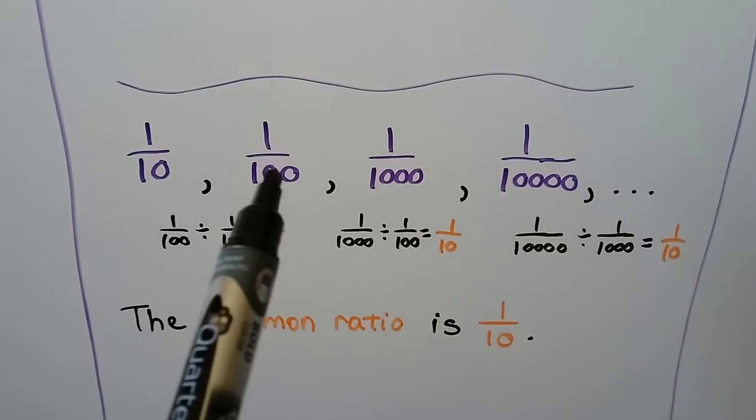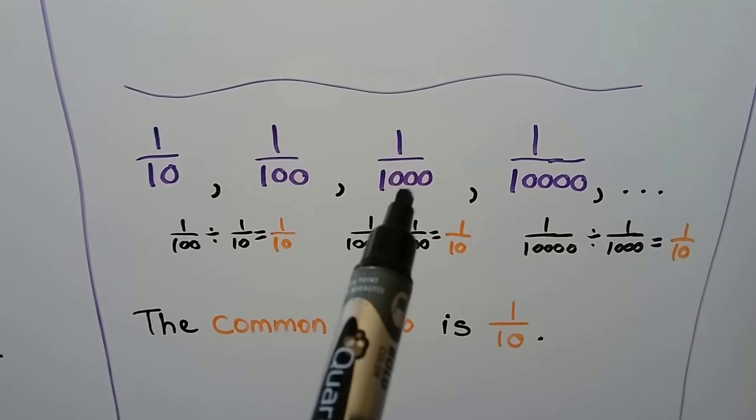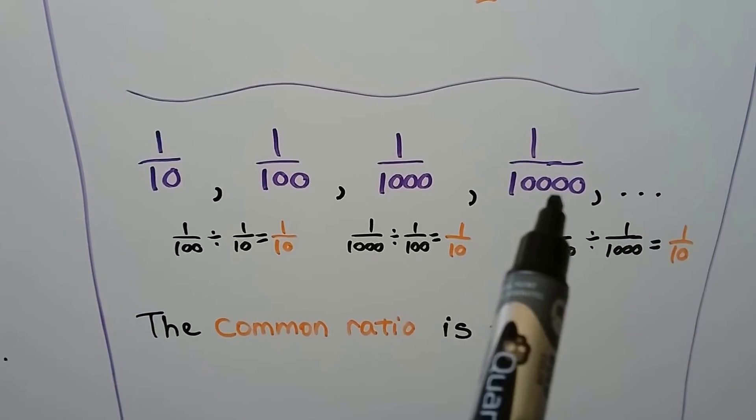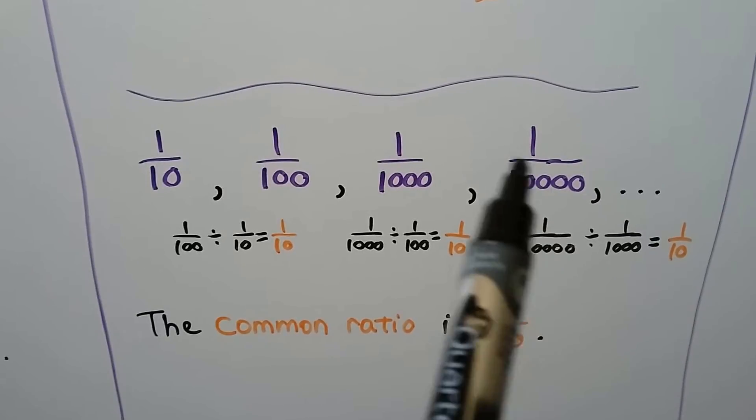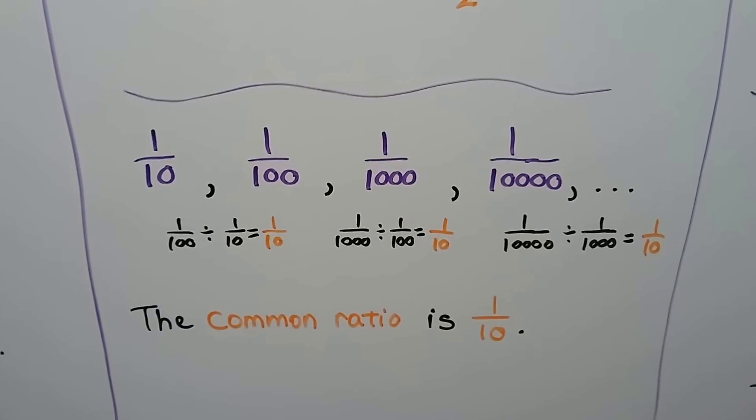For this one, we do 1 one-hundredth divided by 1 tenth, and we get 1 tenth. 1 one-thousandth divided by 1 one-hundredth, we get 1 tenth. We do 1 ten-thousandth divided by 1 one-thousandth, we get 1 tenth. We know the common ratio, r, is 1 tenth.